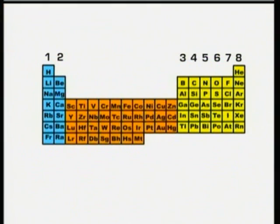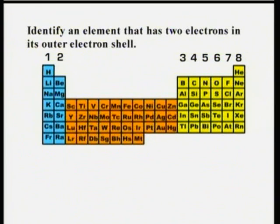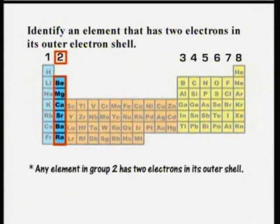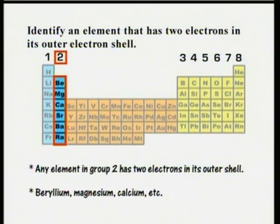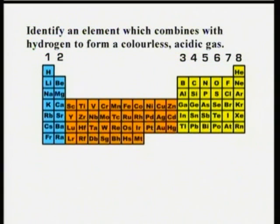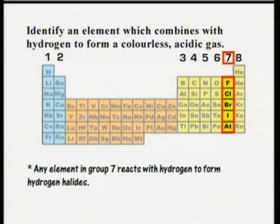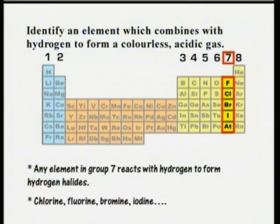Here are some questions about the periodic table. Identify an element in the periodic table that has two electrons in its outer shell. Any element in group 2 has two electrons in its outer shell, so you could have said beryllium, magnesium, calcium, etc. Identify an element which combines with hydrogen to form a colourless, acidic gas. Any element in group 7 reacts with hydrogen to form hydrogen halides, which are gases that dissolve in water to make acids. So you could have said chlorine, which reacts with hydrogen to form acidic hydrogen chloride gas, or fluorine, bromine, iodine, etc.